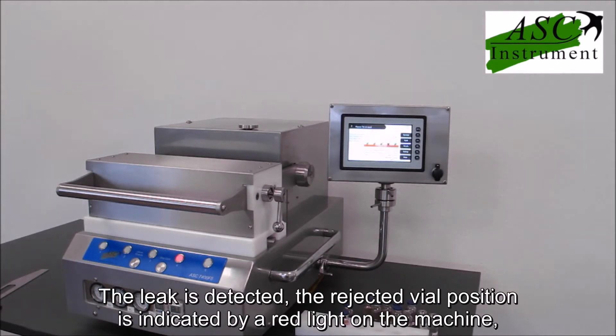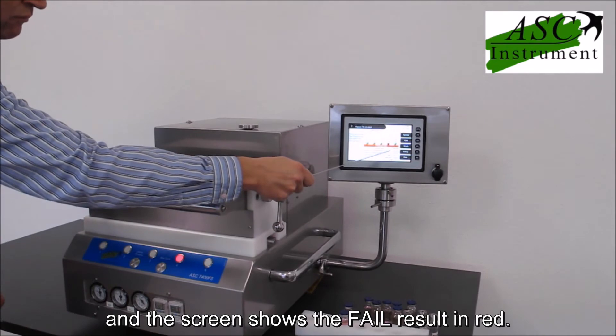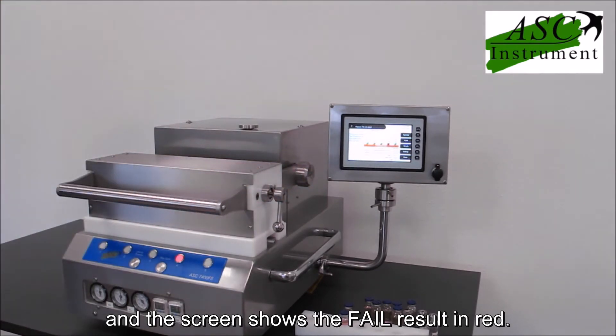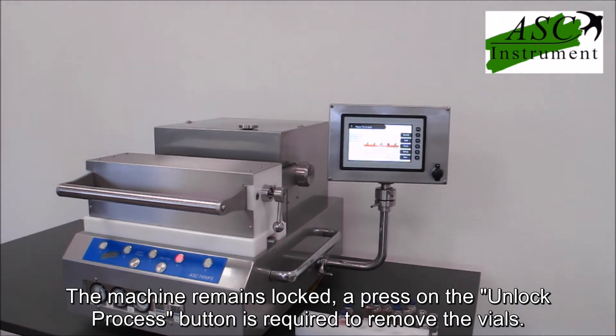The leak is detected. The rejected vial position is indicated by a red light on the machine and the screen shows the fail result in red. The machine remains locked. A press on the unlock process button is required to remove the vials.